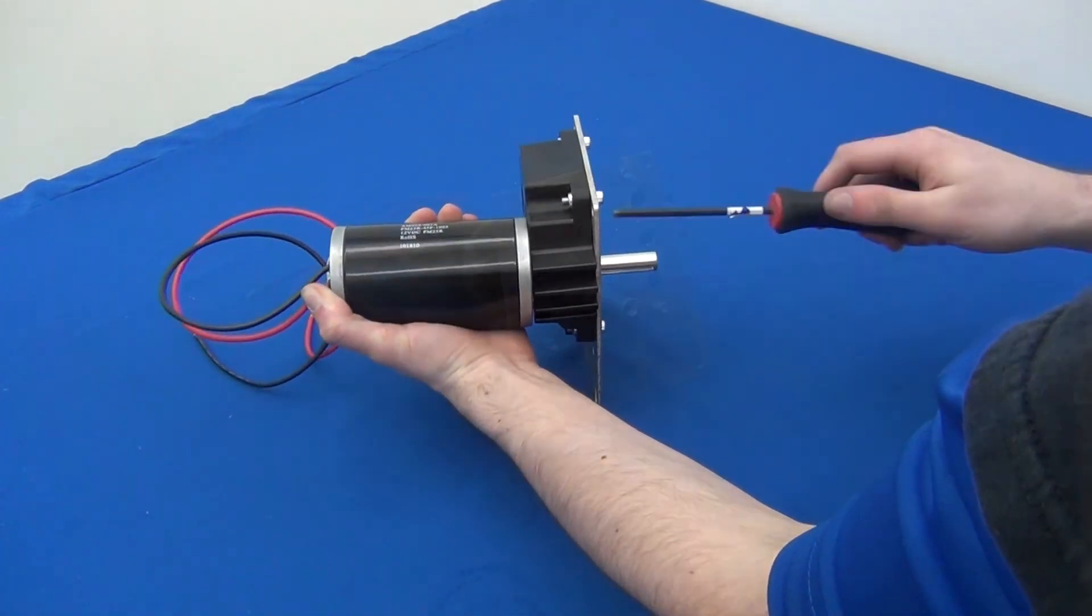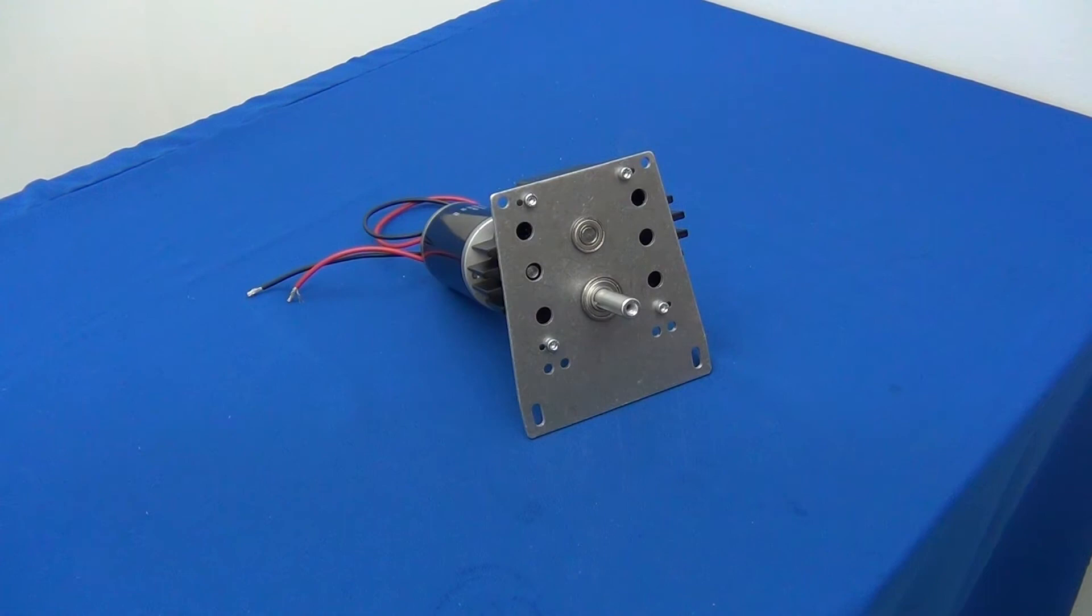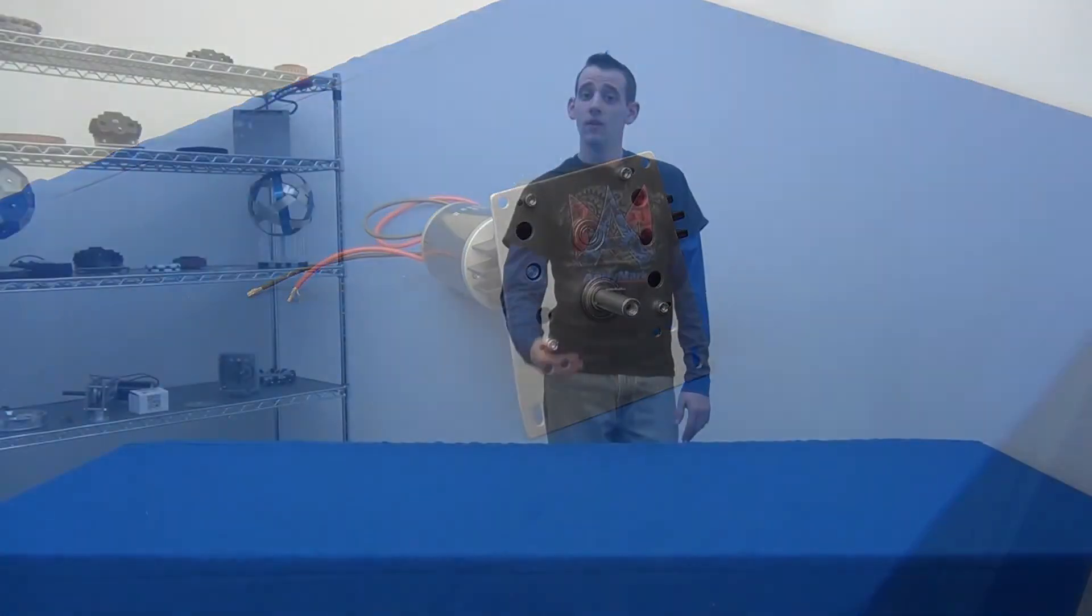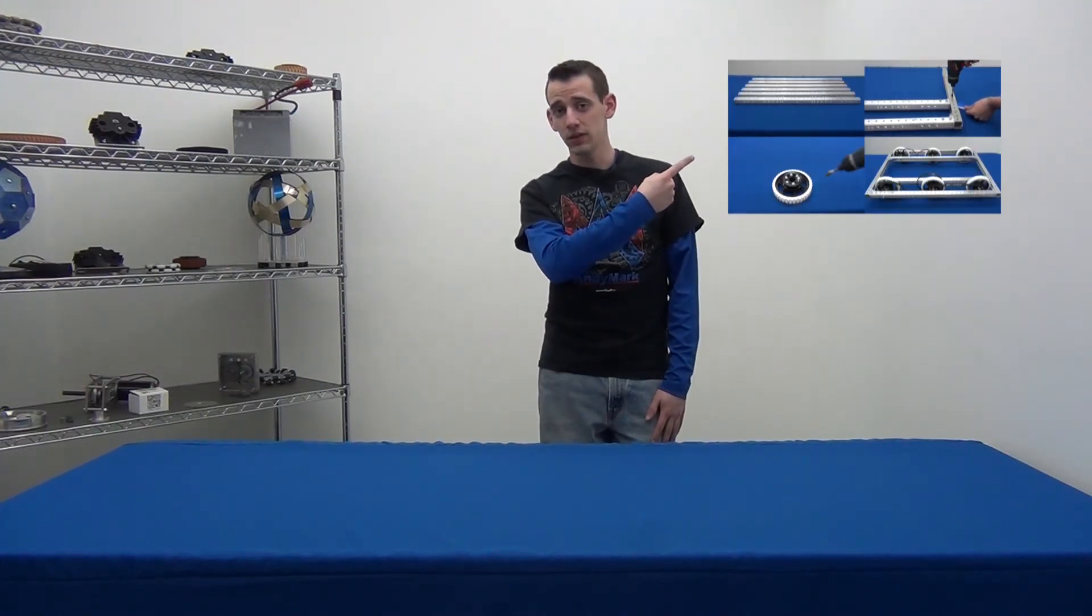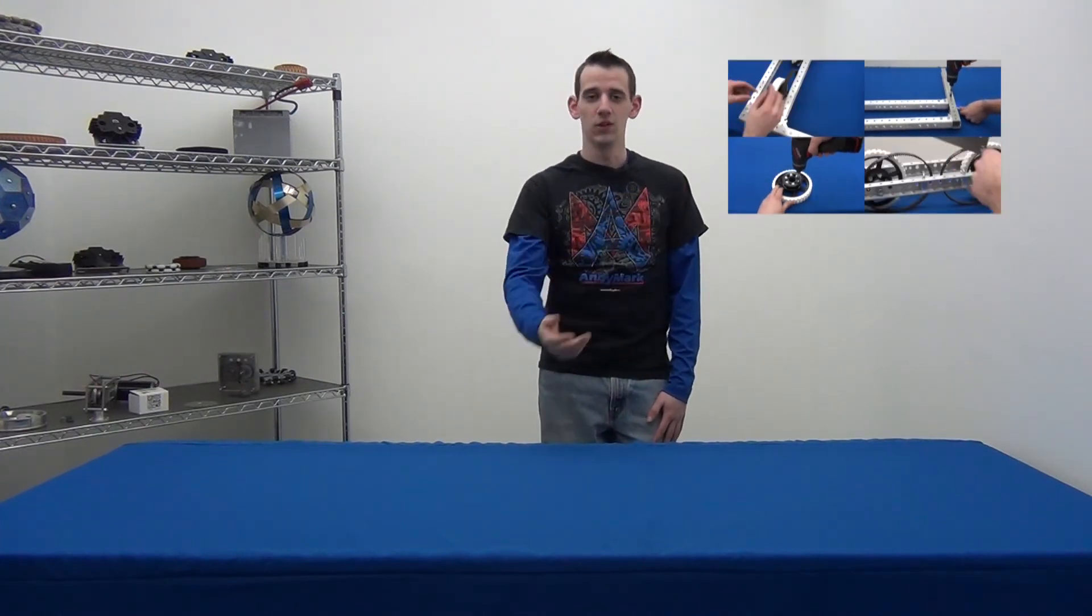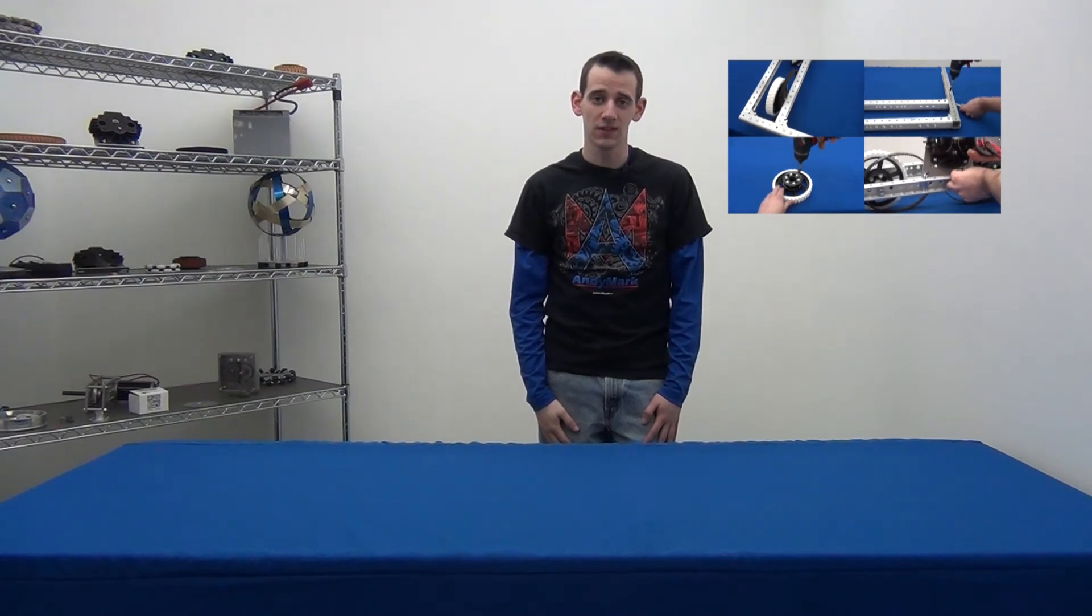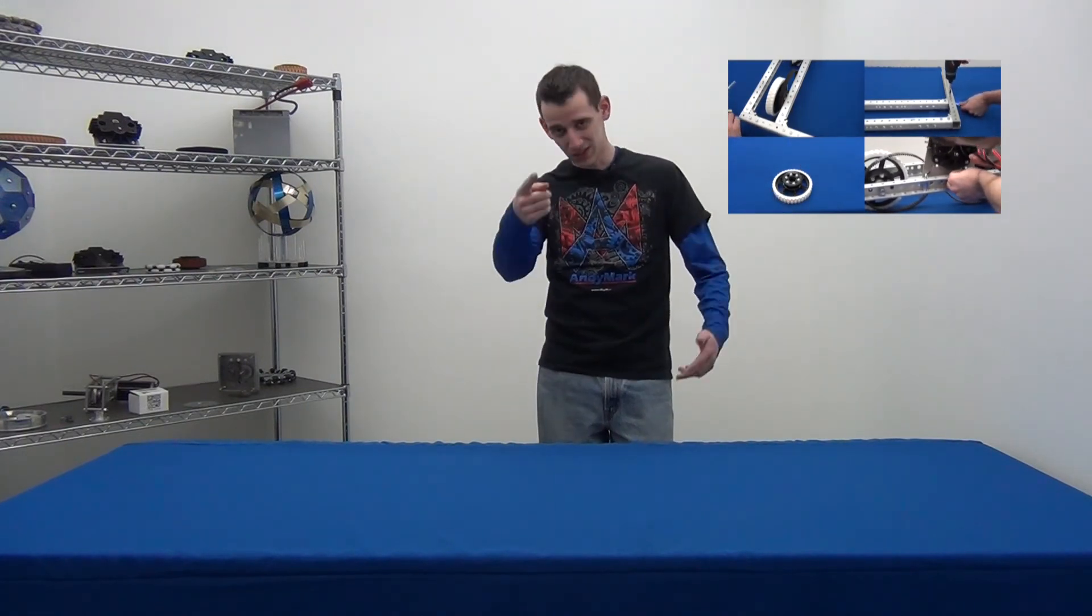Once the second screw is tightened, go back to the first one and finish tightening that. For those of you who are assembling the 2013 kit, click this video here to continue building with the chassis. For those of you who were just watching for the gearbox assembly, thanks for watching and we'll see you next time.